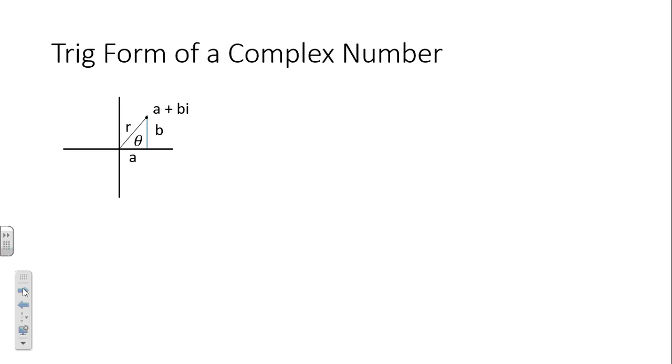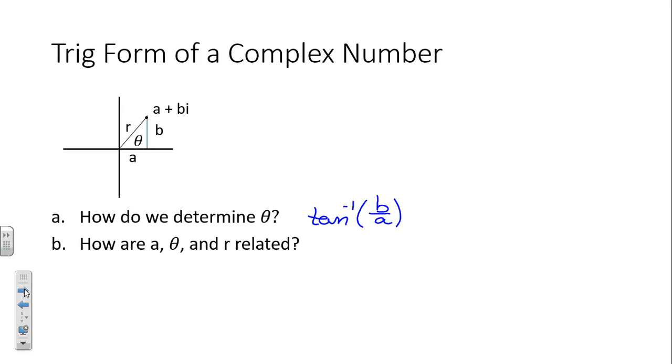So, if we want the trig form of a complex number, what will a be equal to? Well, first of all, let's start with theta. How would we find theta? Inverse tangent. Inverse tangent of b over a. Does that look familiar? Yes. When we were working with vectors, we had to find direction angles, right? And the direction angle looked very similar to this angle. Just a different plane, different labels on the plane. So, we know how to find theta.